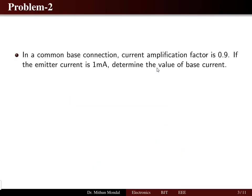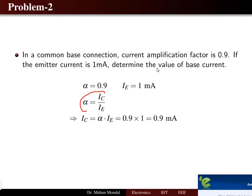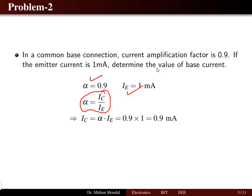Second problem: a common base connection amplifier has an amplification factor alpha of 0.9 and emitter current of 1 milliamp. We need to determine the base current. Using the given alpha and emitter current — since alpha is the ratio of collector current to emitter current — collector current equals alpha times emitter current, giving 0.9 milliamps as the collector current.